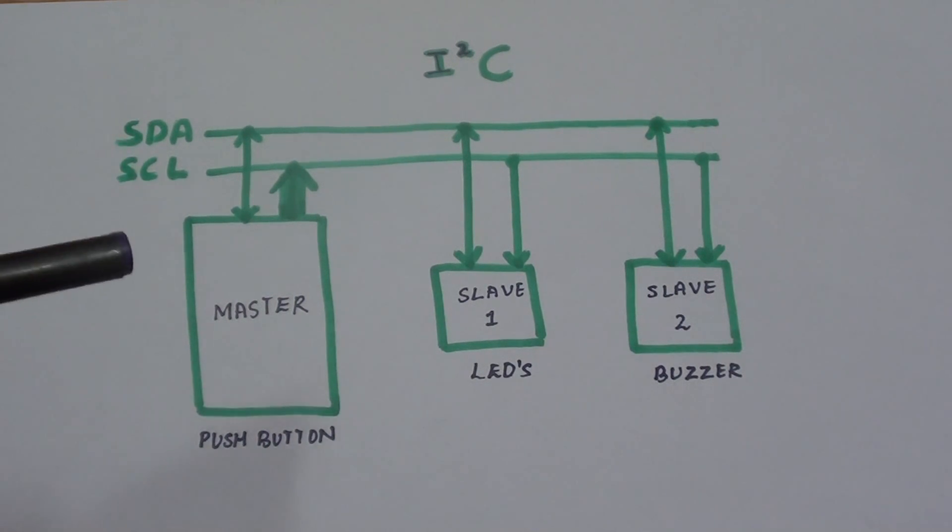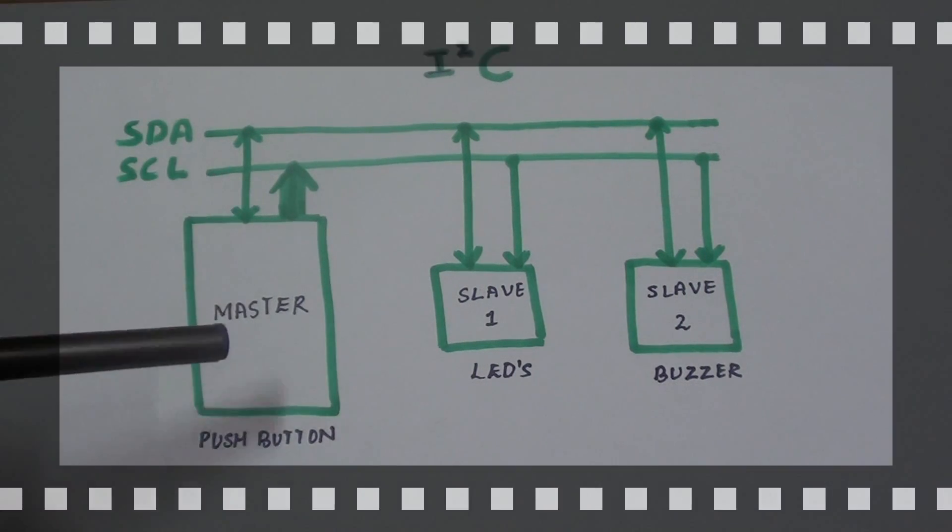The I2C has the advantage that it needs only two signals connected to the Arduino for using multiple devices. Only two connections is fairly easy and you get acknowledgement that signal has been received correctly.